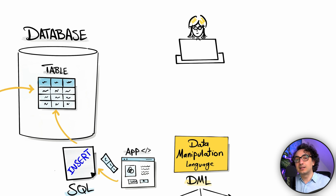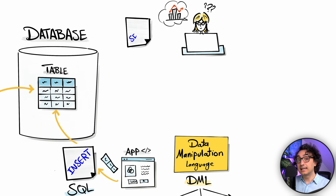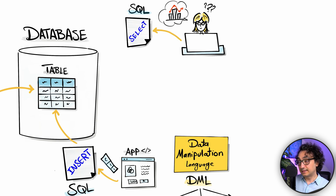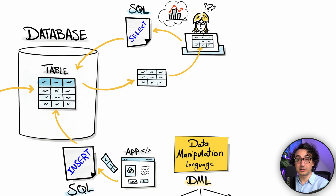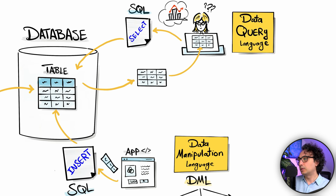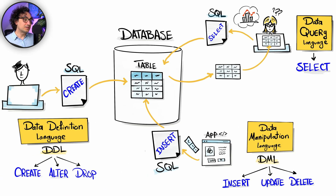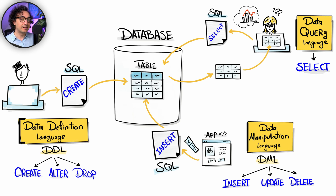Once we have a table with data, we can start asking questions. If you have an analytical question about your data, you write an SQL query using the SELECT command. You send the query to the database, and the database returns the result answering your question. This is called the Data Query Language, or DQL, and it has one famous command: SELECT. We use it to query our data. Those are the three different command families in SQL, and we will spend most of our time learning how to write the correct query for the correct answer.